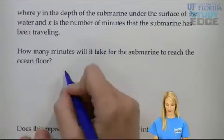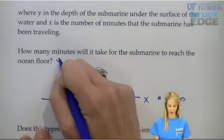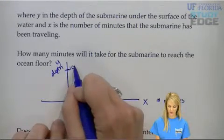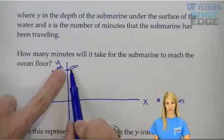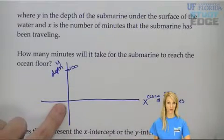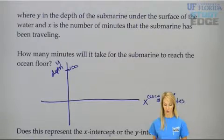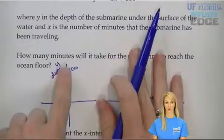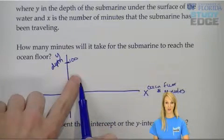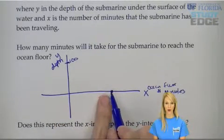So what does this look like on a graph? x is the number of minutes, and y is the depth. If we're starting out at 100 feet above the ocean floor, we let our x-axis be the ocean floor — when you're at a height of zero, you're at the ocean floor. We want to know how long it takes to get there. Going down at a rate of negative 2, for every minute we're going down 2 feet. We want to know how many minutes it's going to take to get all the way down to the ocean floor.